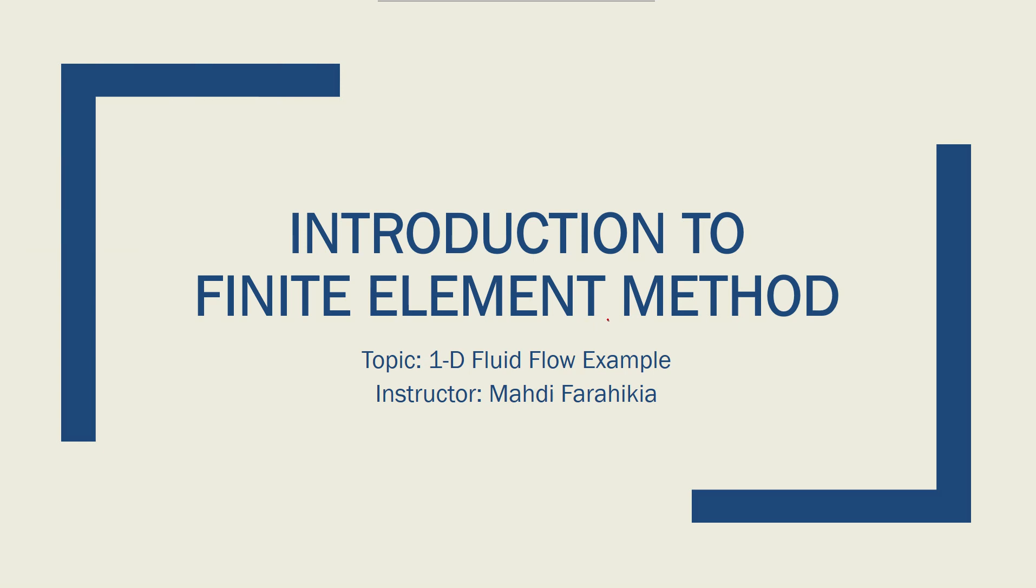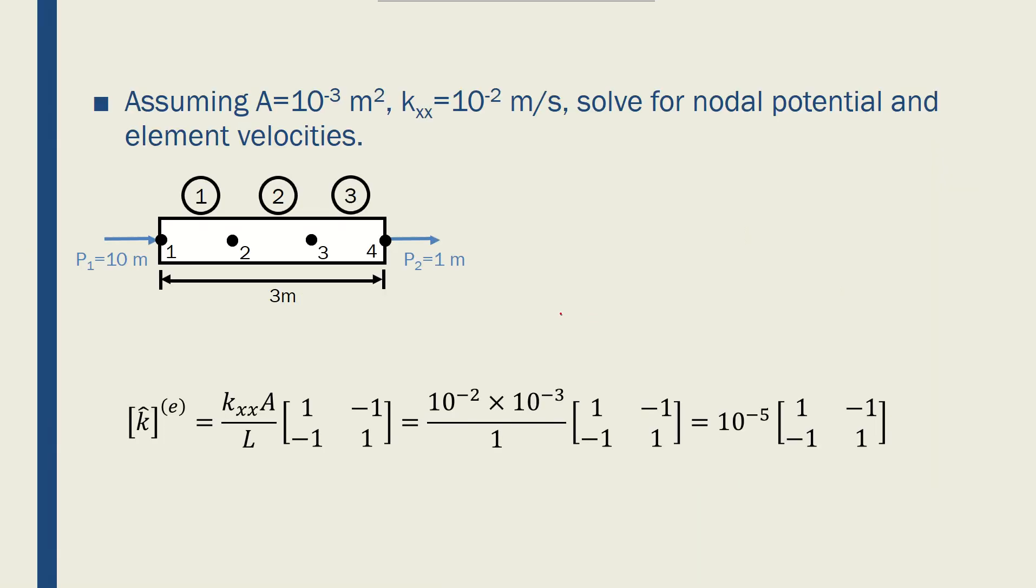Let's work on a 1D fluid flow example. Let's say we have a pipe like this, 3 meters long, and the cross-section area is 10 to the minus 3 meters squared, and the permeability of the flow inside of it is 10 to the minus 2 meters per second.